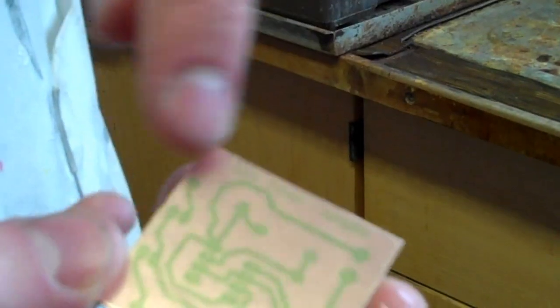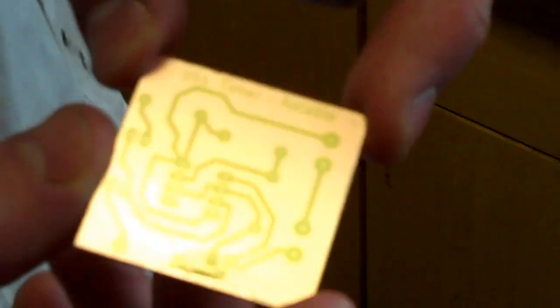So the pinkish color is the exposed copper and the slightly greenish color is the bits that are protected by the etch resist.